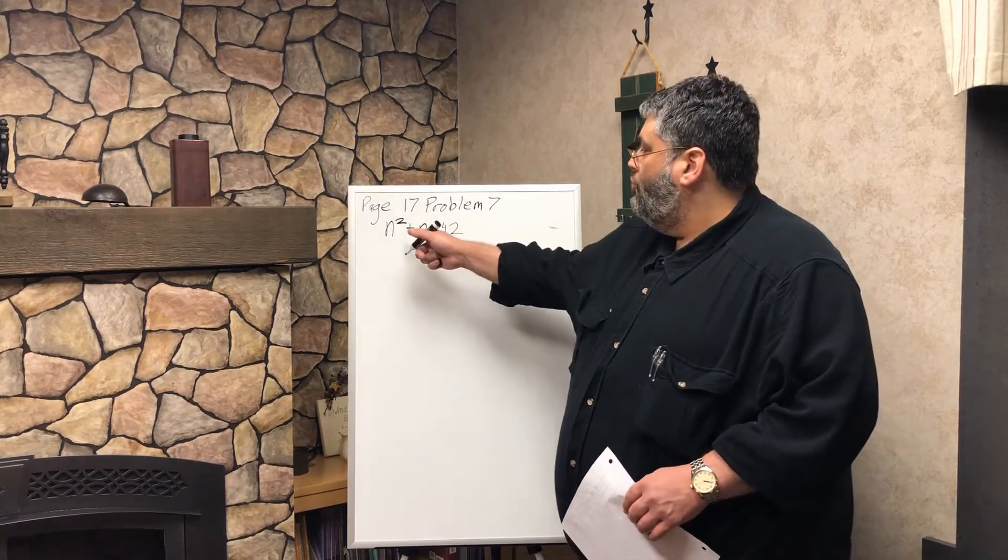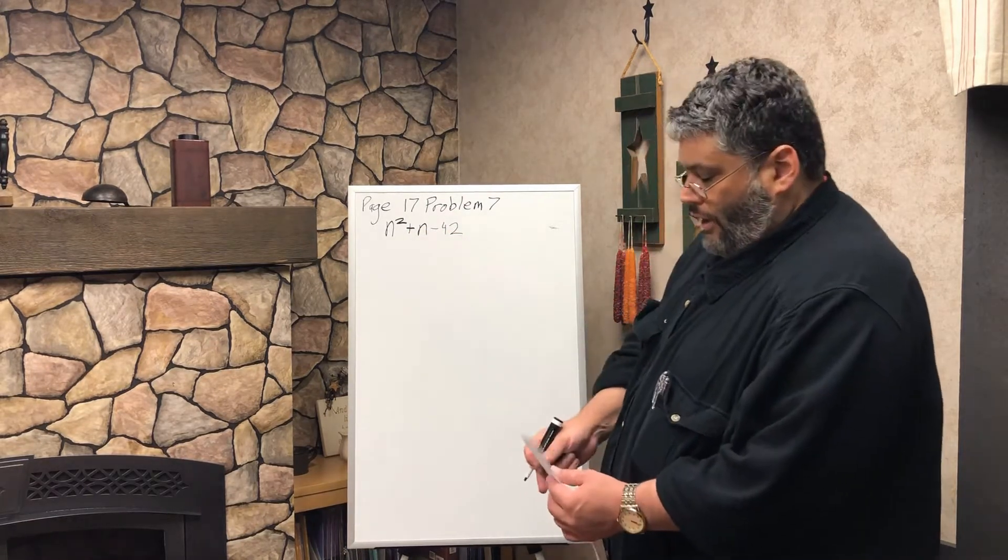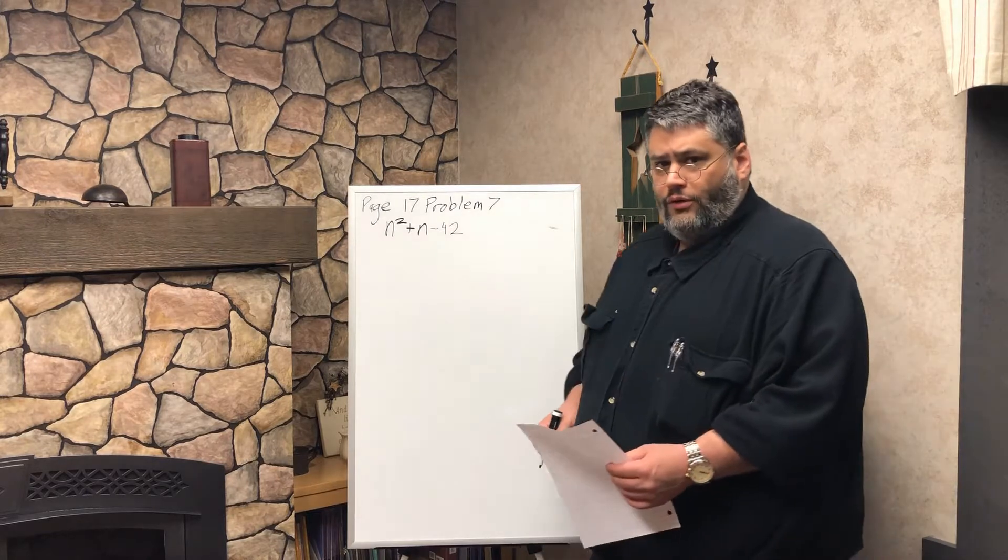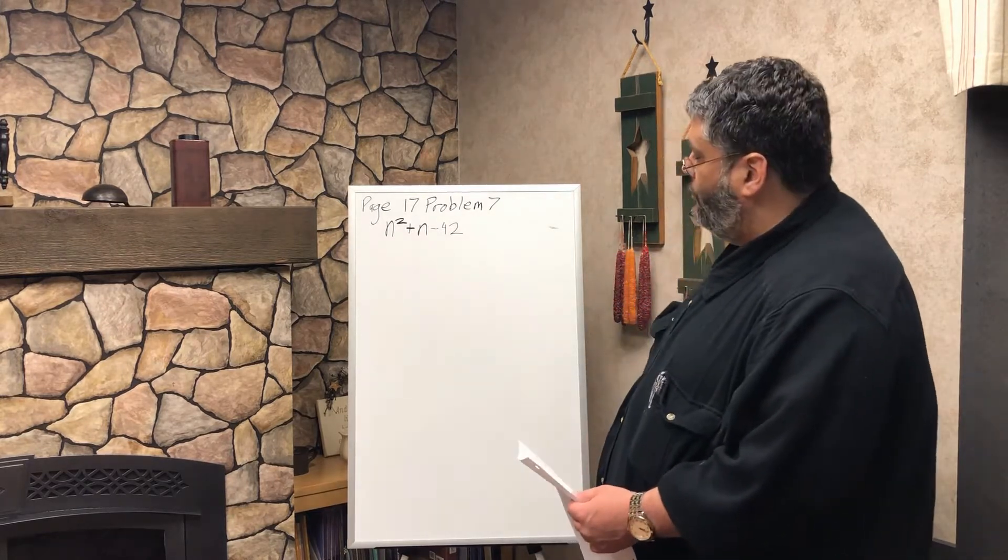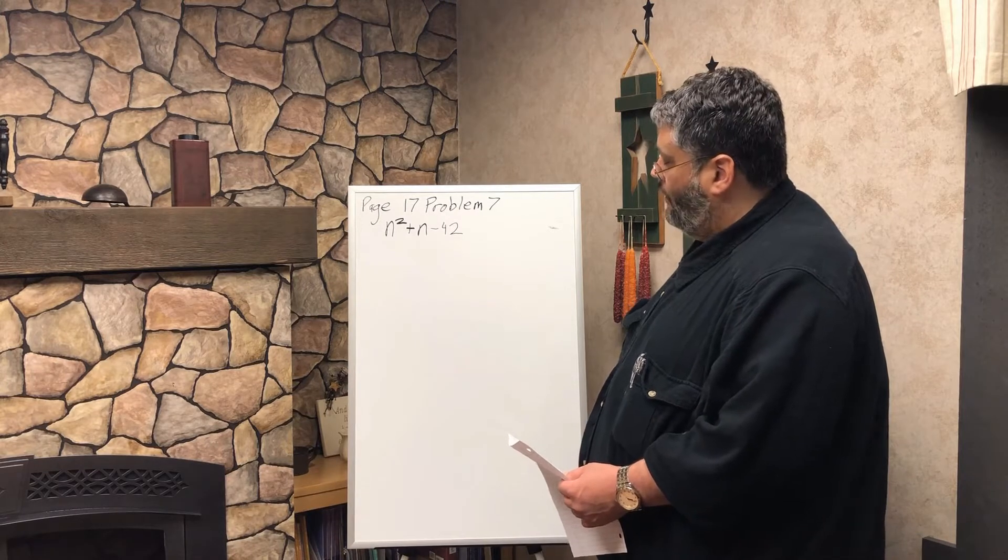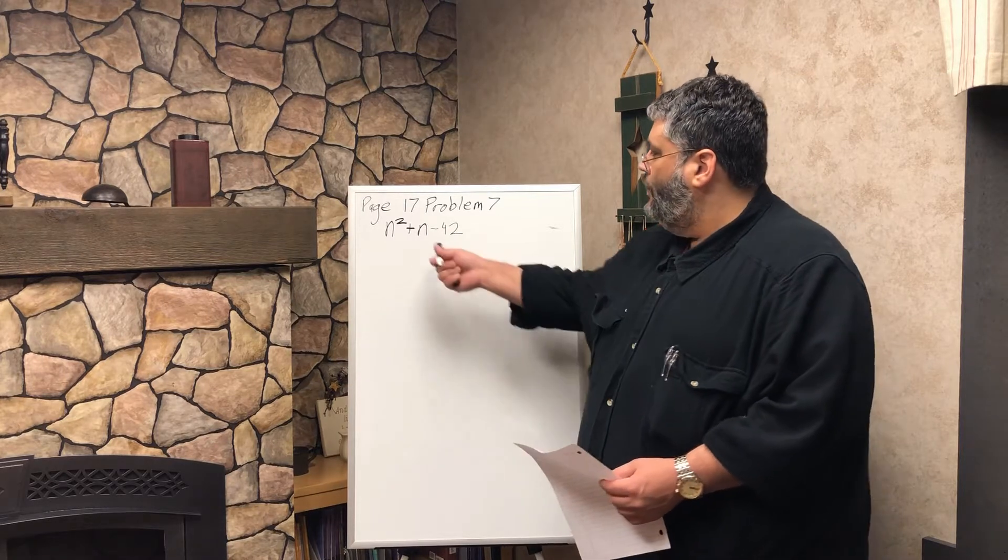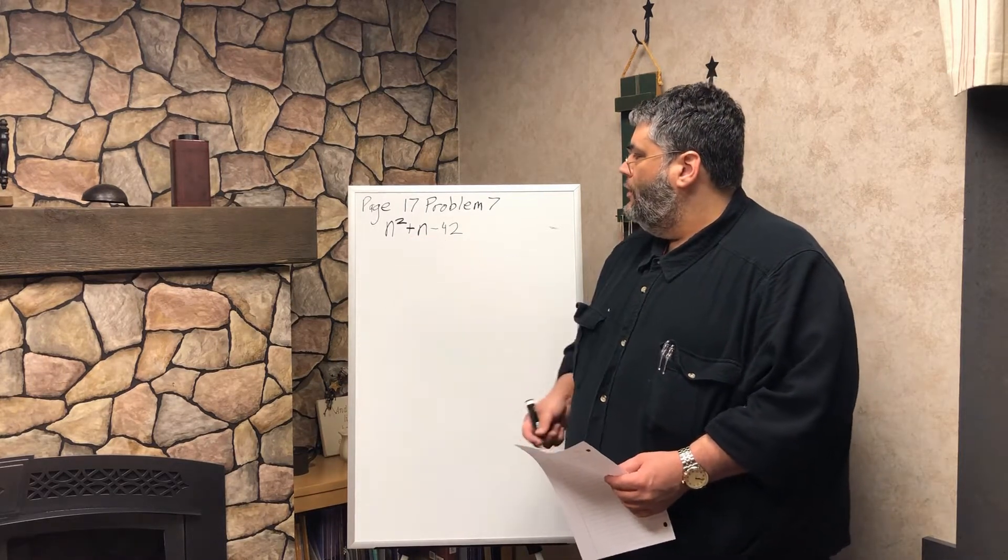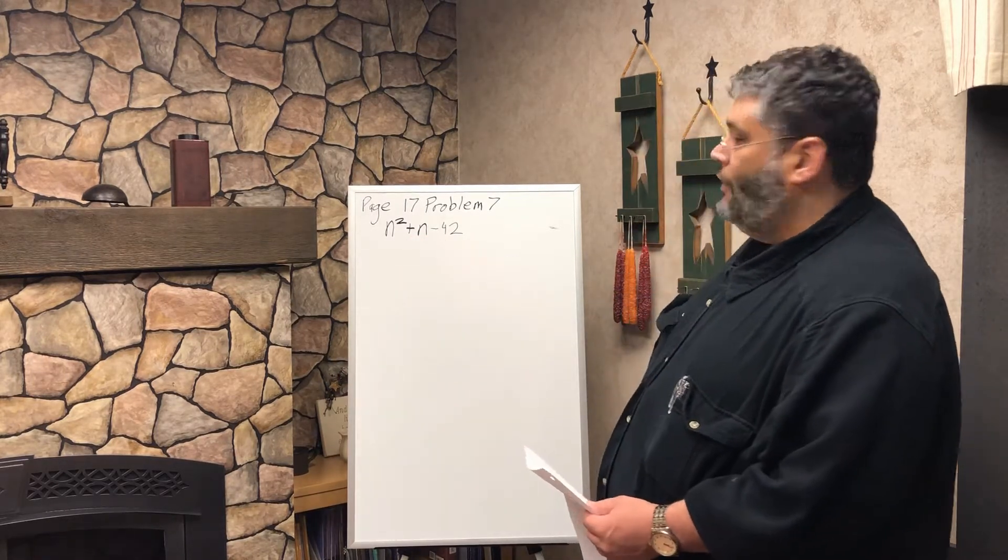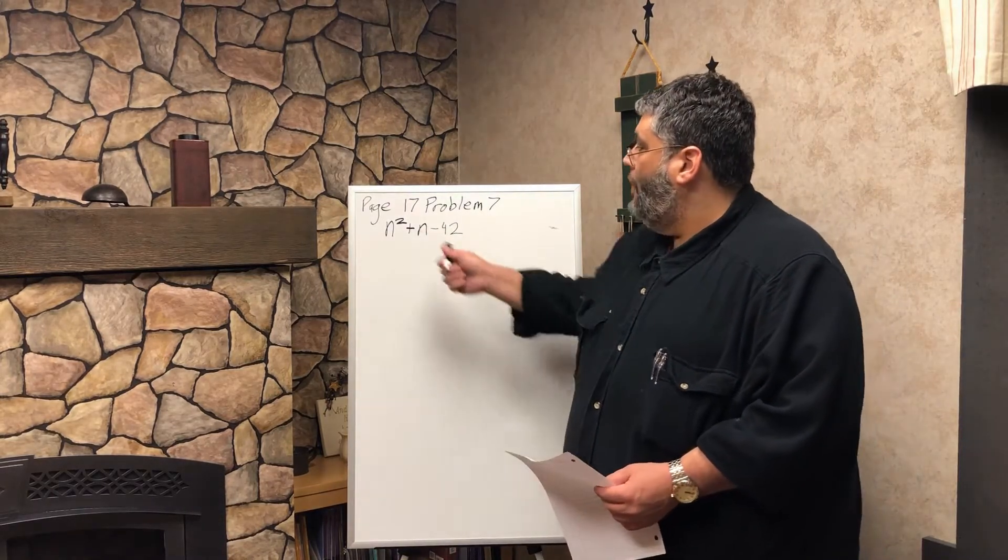This is n squared plus n minus 42. So one of the things we want to do here when we look at things like this is we want to see if there's a way that we can make it so that we can take this middle n here and break it into like a couple terms, and then factor.